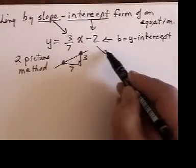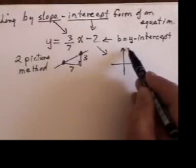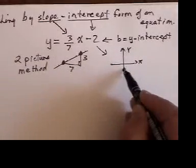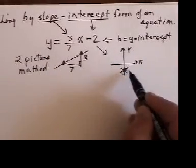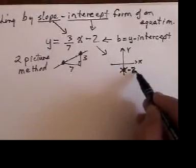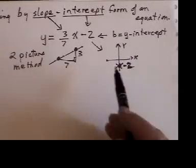My second picture says, take this number and draw a little xy axis. And this says that it crosses the y axis right there at negative 2. Therefore, that becomes my starting point.